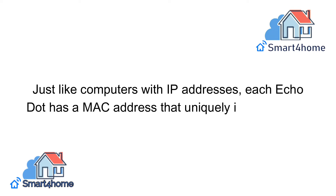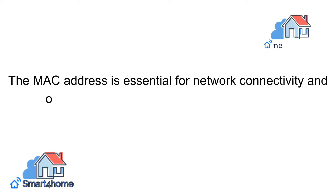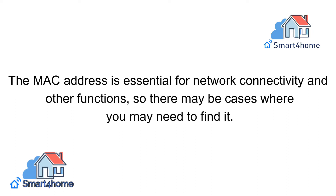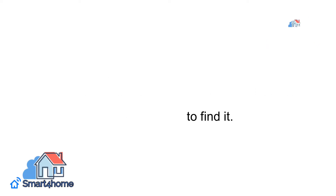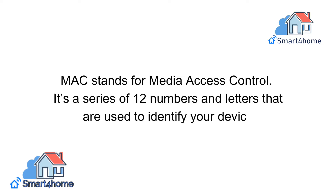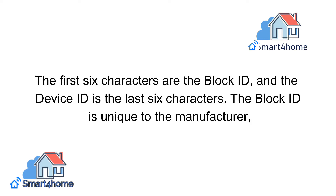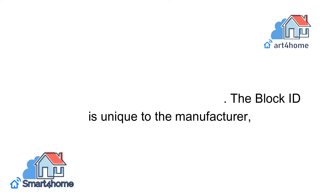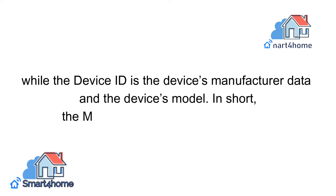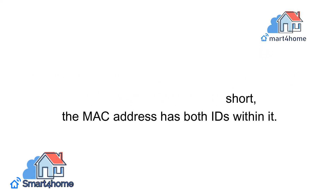Just like computers with IP addresses, each Echo Dot has a MAC address that uniquely identifies them. The MAC address is essential for network connectivity and other functions, so there may be cases where you need to find it. MAC stands for Media Access Control. It's a series of 12 numbers and letters used to identify your device. The first 6 characters are the block ID, and the last 6 characters are the device ID. The block ID is unique to the manufacturer, while the device ID contains the device's manufacturer data and model. In short, the MAC address has both IDs within it.